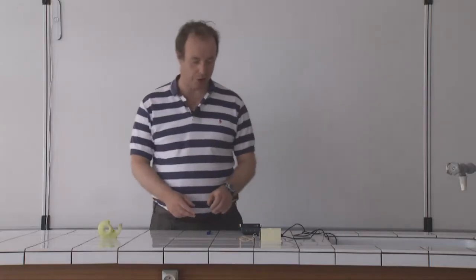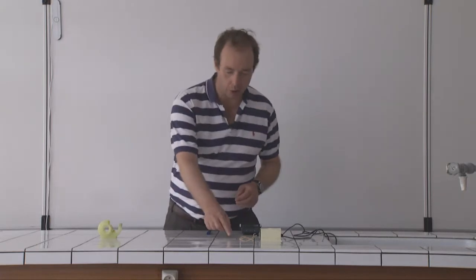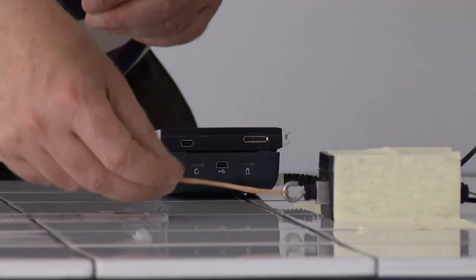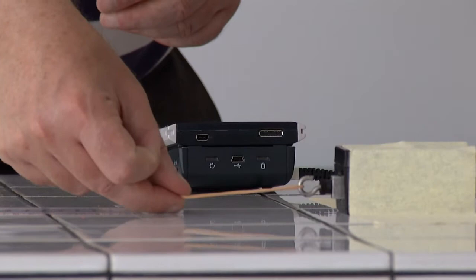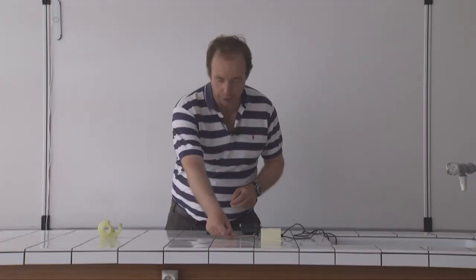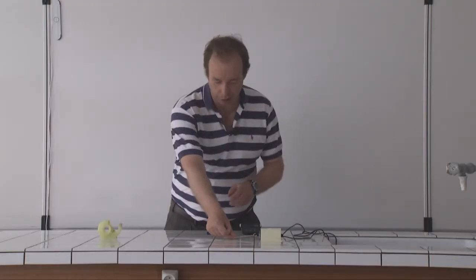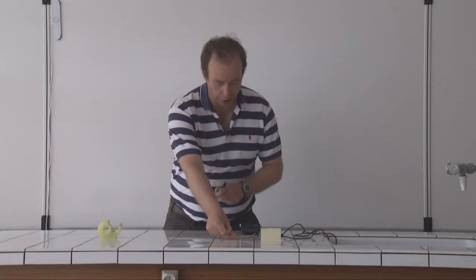So that's the force meter zeroed now. The ruler has been set up so that the rubber band gets up towards zero with very little force at the start. From then on, we're going to measure the extension of the rubber band.